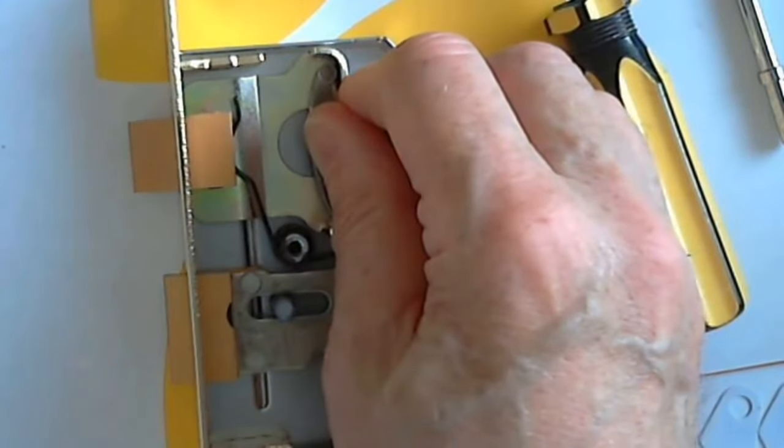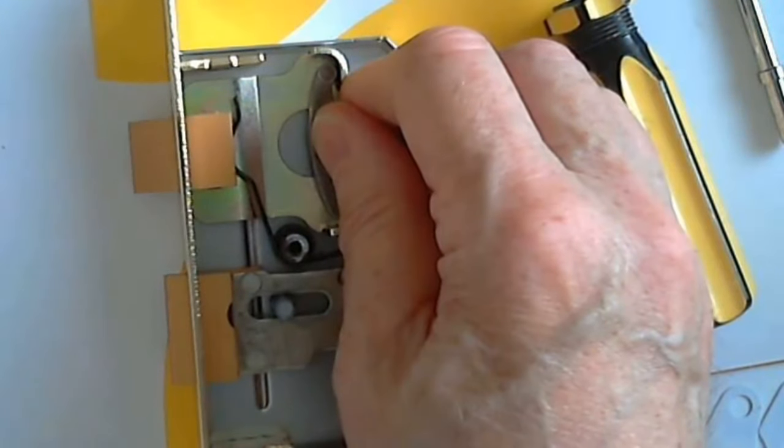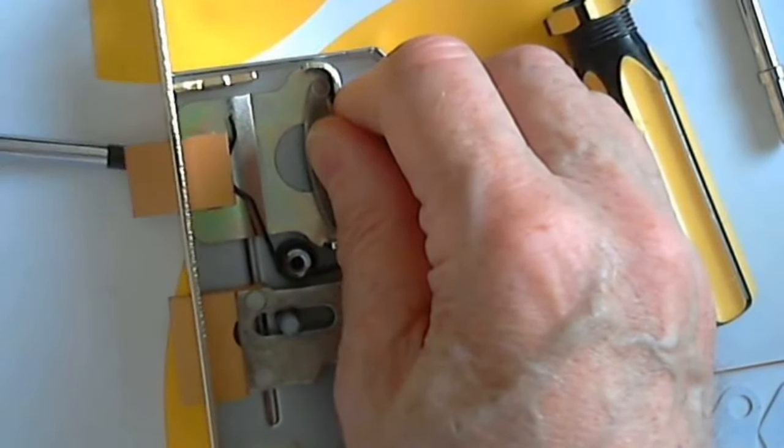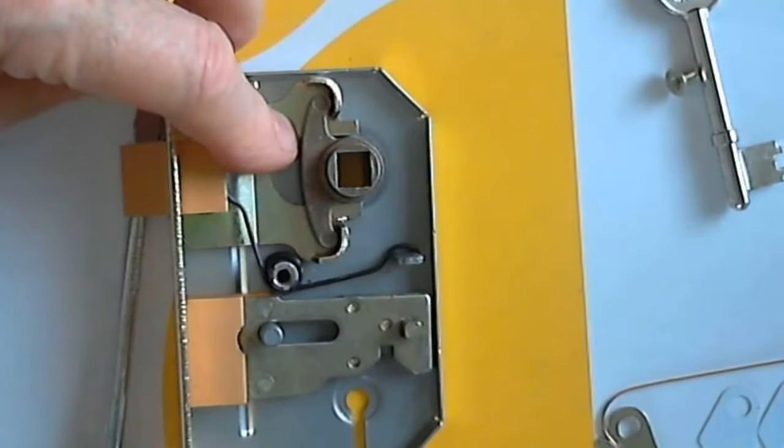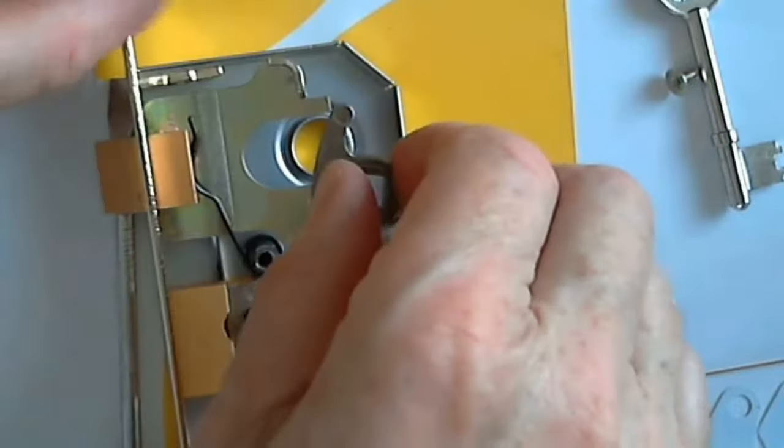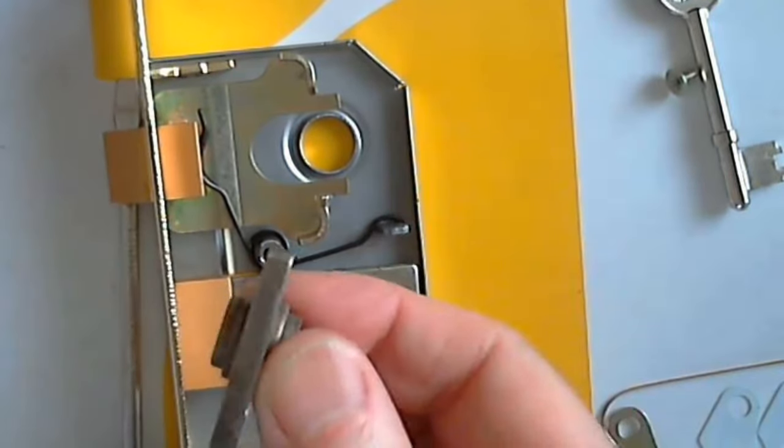When the latch is in the right hand position, it's got a tendency to spring up. So, I'm going to put a screwdriver blade under there to stop that from happening. Okay. I don't need this bit just now.